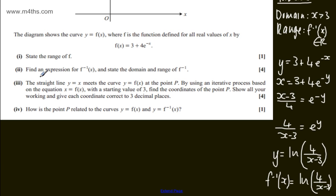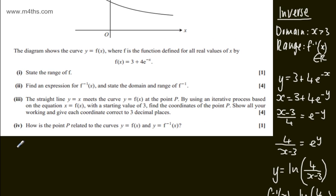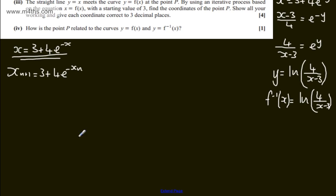Moving on to the third part, again for four marks, we're told the straight line y equals x meets the curve y equals f of x at the point P. By using an iterative process based on the equation x equals f of x with a starting value of 3, find the coordinates of the point P. We're asked to show all our workings and give each coordinate correct to three decimal places. So we have x equals f of x, which means x equals 3 plus 4e to the minus x. Setting up an iterative process, x sub n plus 1 equals 3 plus 4e to the minus x sub n. We have x naught equals 3. That's our starting value.